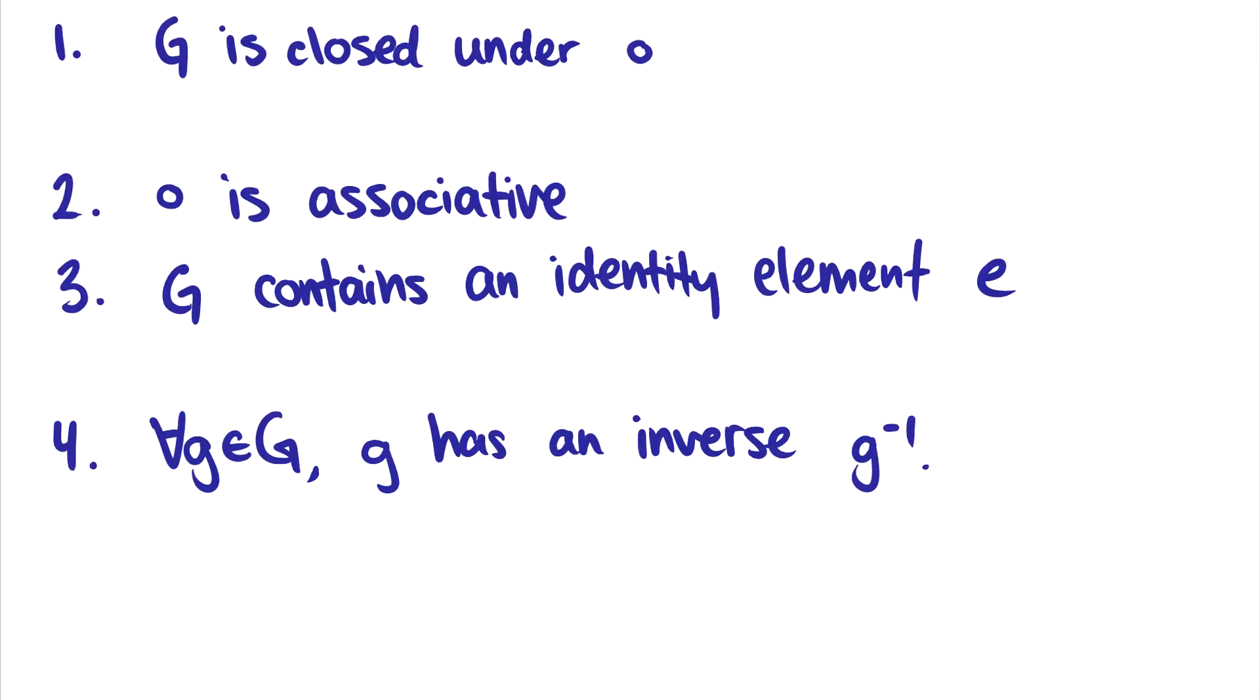First of all, G is closed under the operation, which means that if I have two elements a,b in our set G, then it better be the case that a○b is also going to be in G.